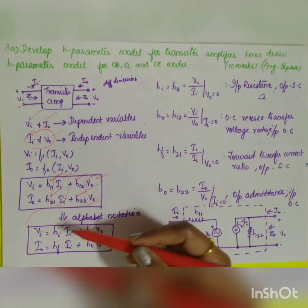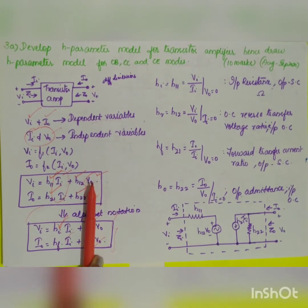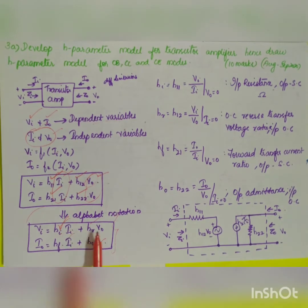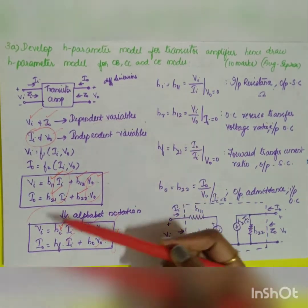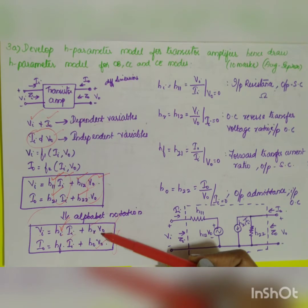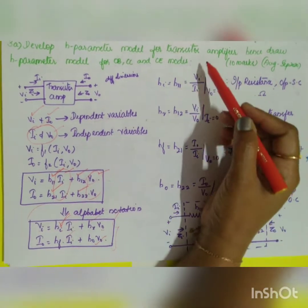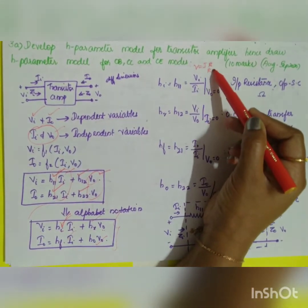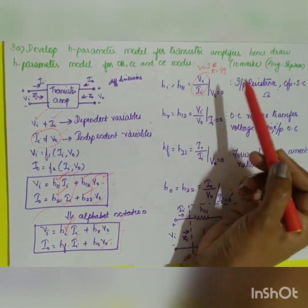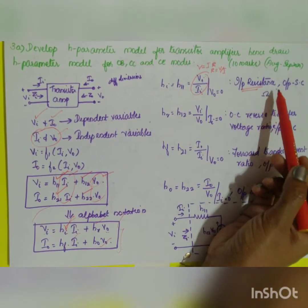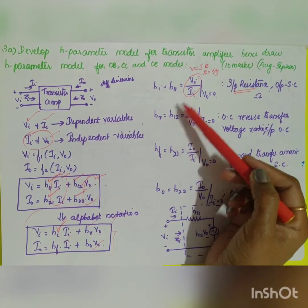hi = h11 = Vi/Ii with Vout = 0. Since it is V/I, it looks like resistance, and both are input quantities, so it is called input resistance. The condition Vout = 0 means the output is short-circuited.